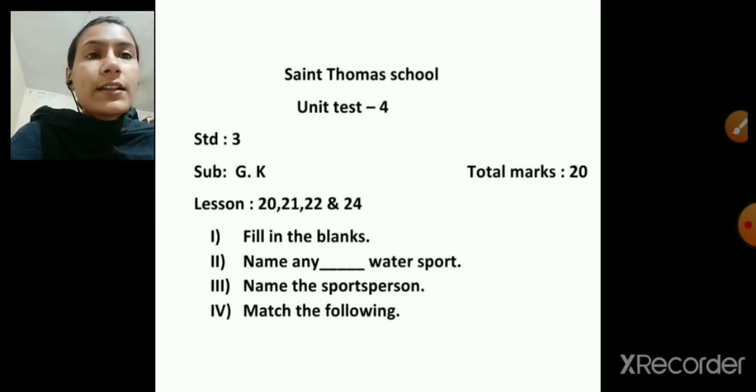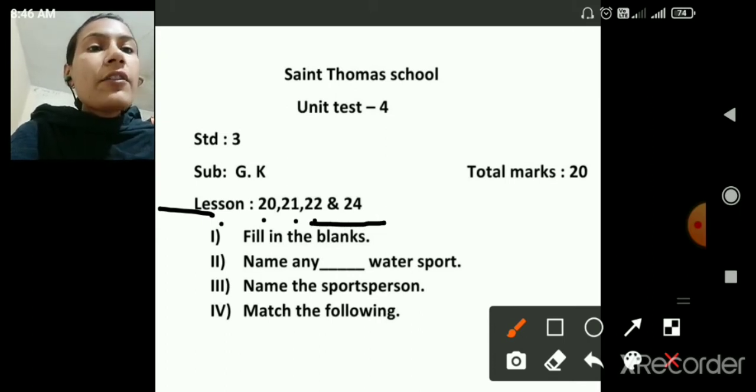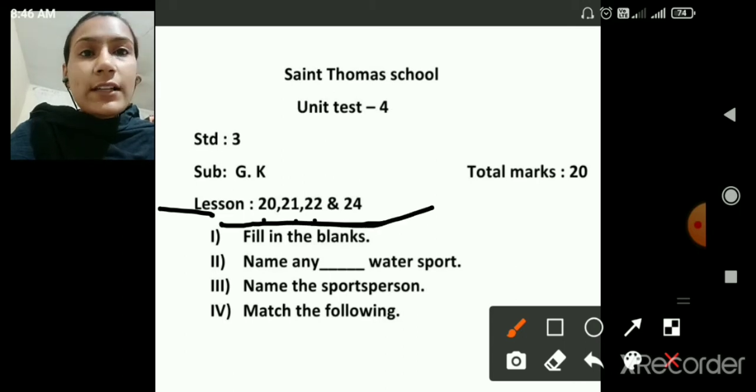So you can see here, this is the paper style for unit test 4, Subject GK. Lesson 20, 21, 22 and Lesson 24. So these four lessons will come, total how many marks? 20 marks.